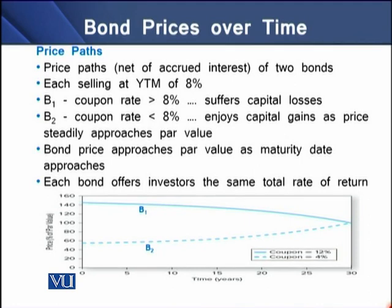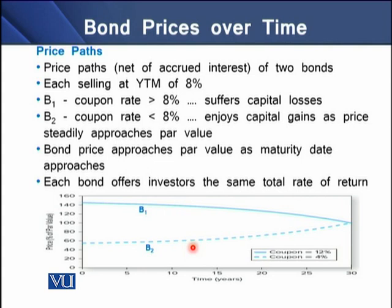We can observe how bond prices move over the bond's lifetime through price path diagrams. The price paths of two bonds are shown: each bond is selling at a YTM of 8%. Bond B1 has a coupon rate greater than 8% — depicted with a thick blue line — and suffers capital losses. Bond B2 has a coupon rate less than 8% and enjoys capital gains as its price steadily approaches par value. Both bond prices approach par value as the maturity date approaches, and each offers investors the same total rate of return.